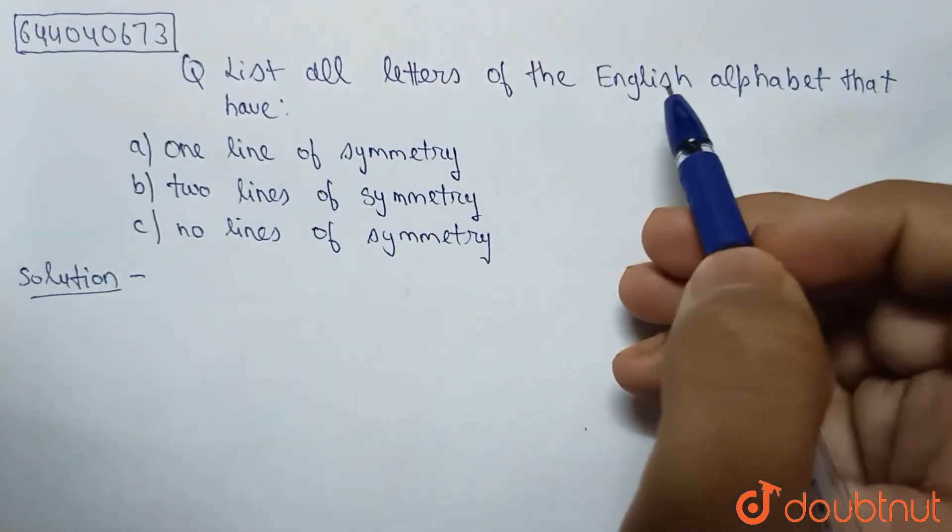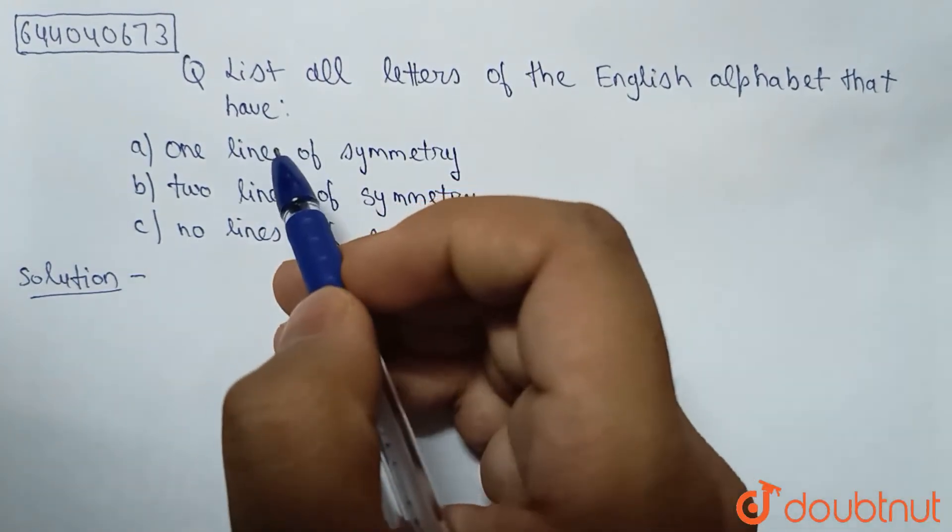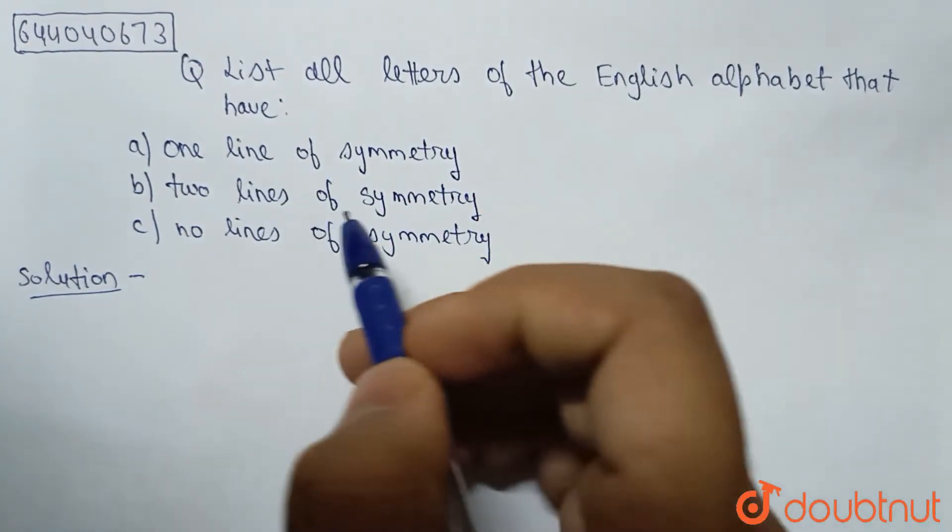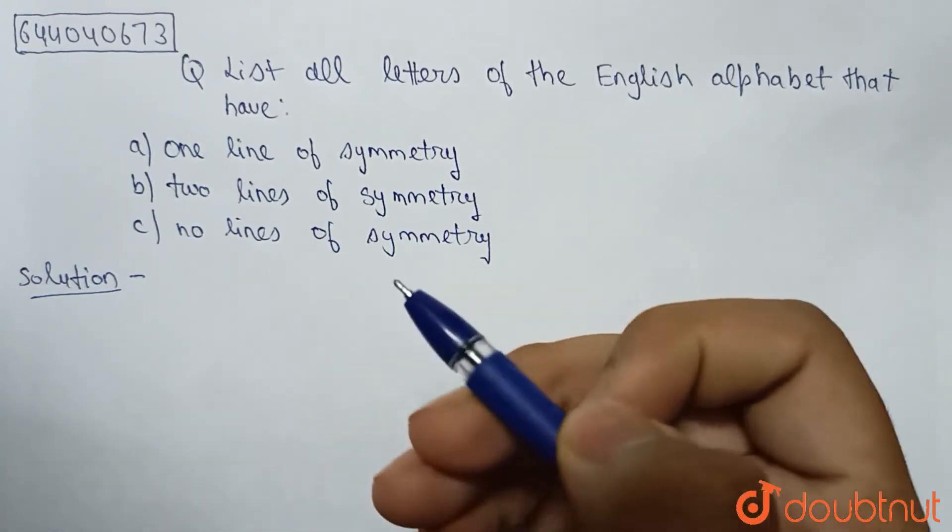List all letters of the English alphabet that have one line of symmetry, two lines of symmetry, and or no lines of symmetry.